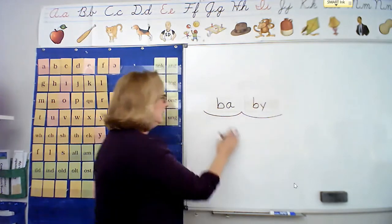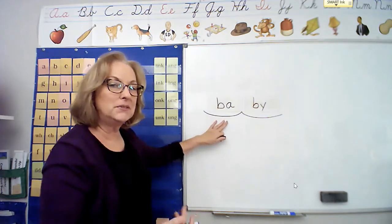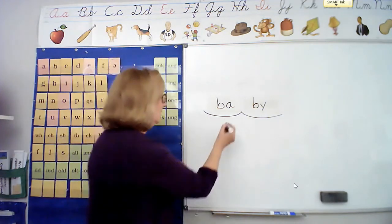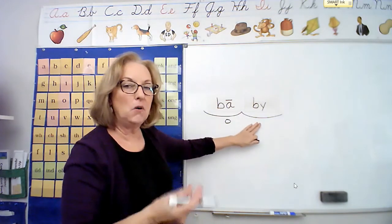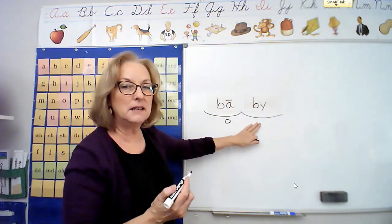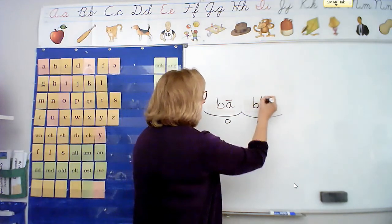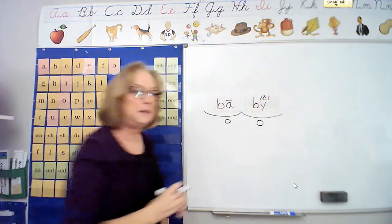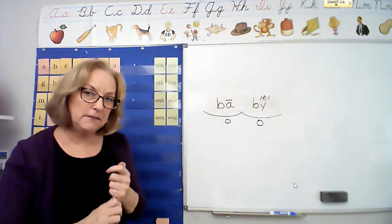Bay-bee. And let's mark our syllables. First syllable, open, closed, vowel consonant e? It's open, so the vowel is long. Second syllable, open, closed, or vowel consonant e? It's open, and it makes the long e sound. Baby. Nice job. You can put your markers down for a minute. I'm going to show you something.